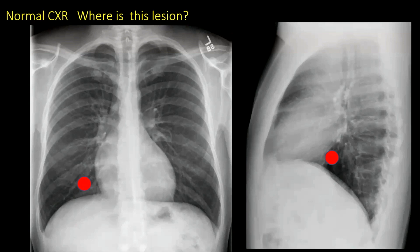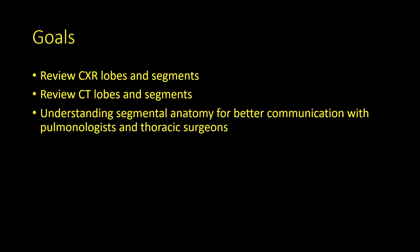Hopefully by the end of the talk, you'll be able to go over the chest radiograph here and tell your thoracic surgery or pulmonary colleagues exactly which lobe and which segment a lesion is in. The goals will be to review the lobes and segments on CT and chest x-ray so you have a better understanding and a better way to communicate with your colleagues.